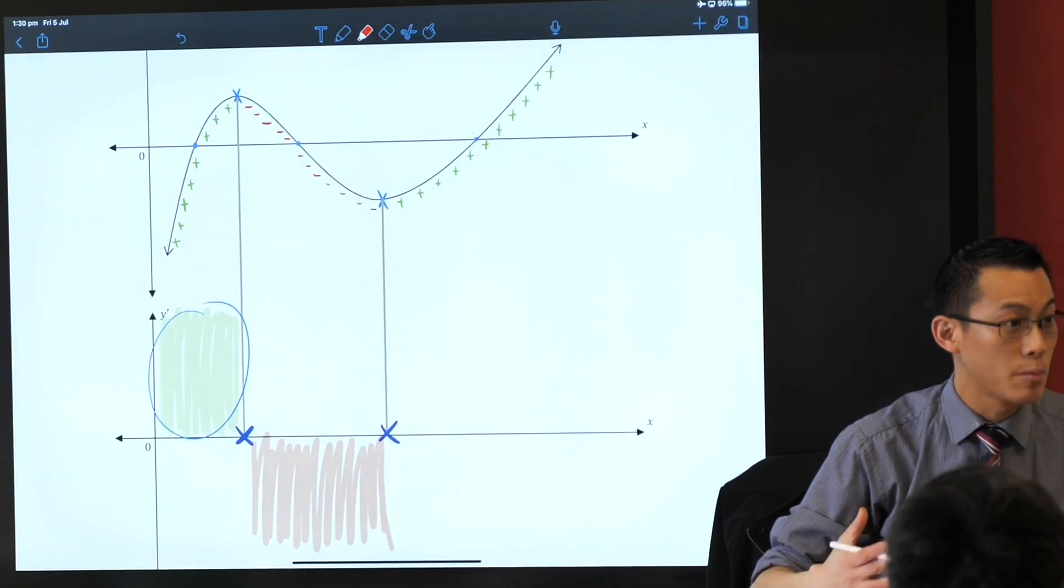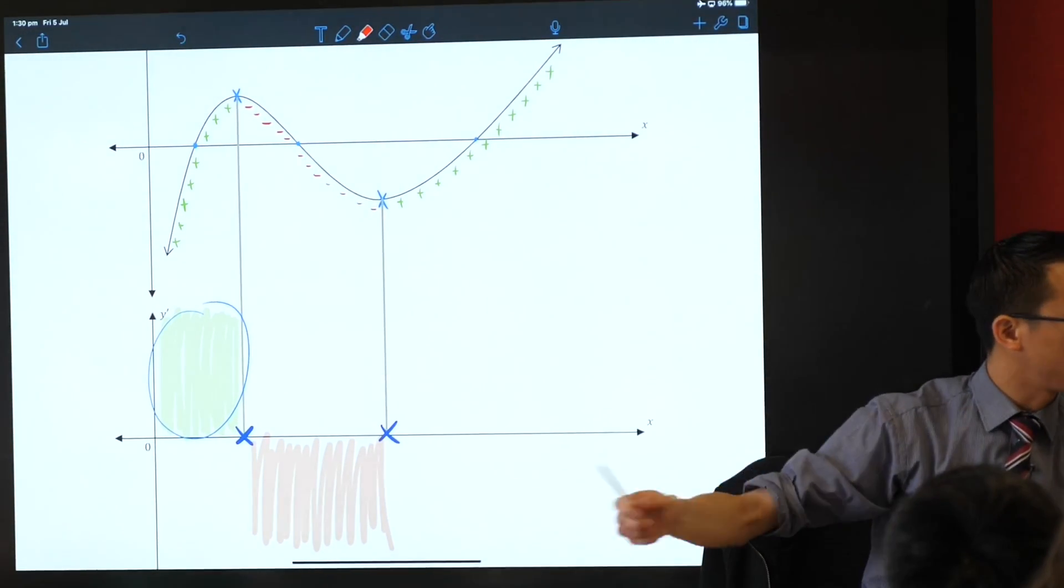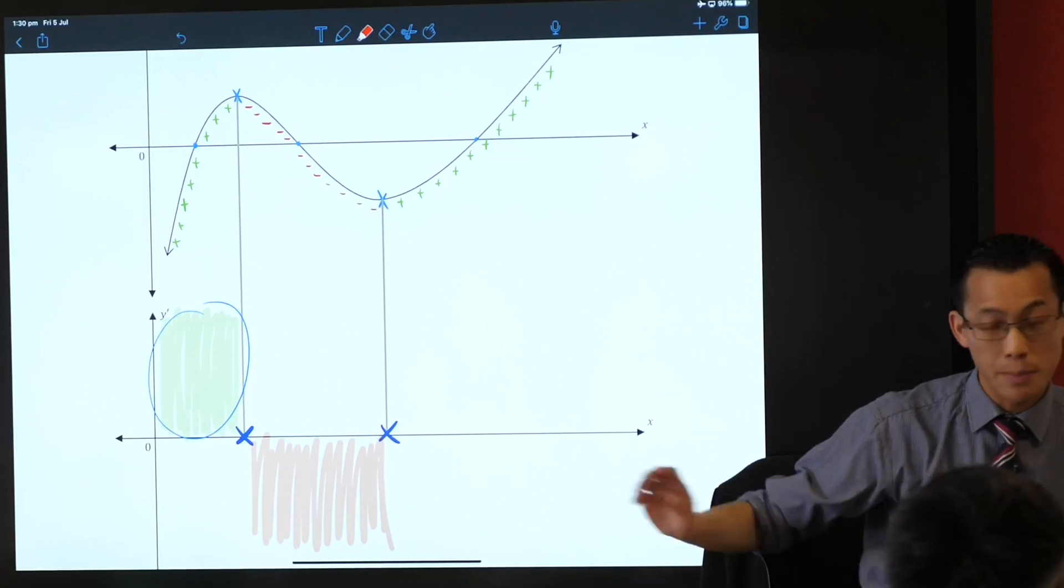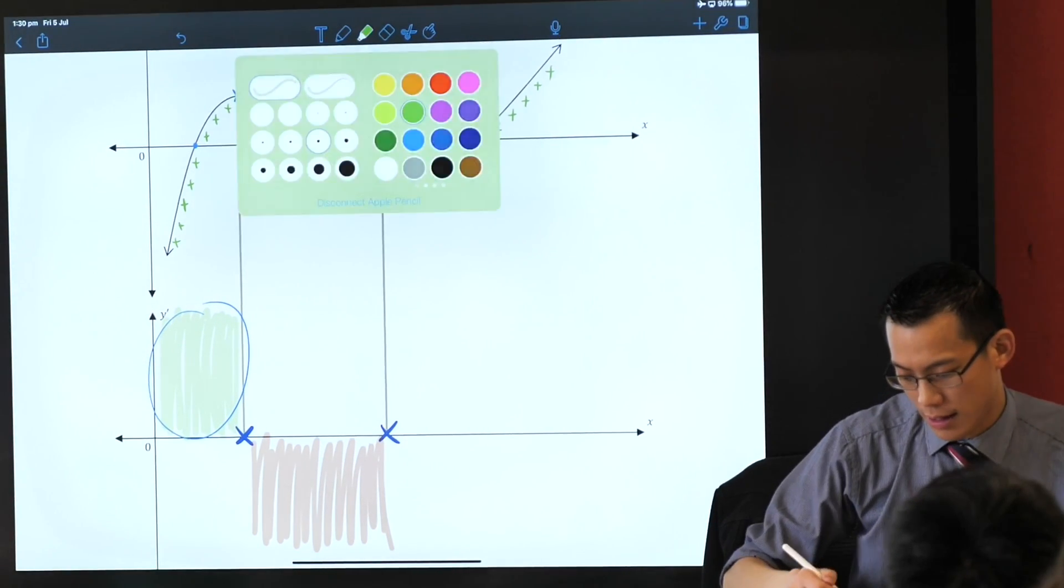Can you see why? It's the same logic, but in reverse, right? You see how in this section, the original function is decreasing, so the gradient should be down here in the negative section. And we're going to finish off by doing something like this.